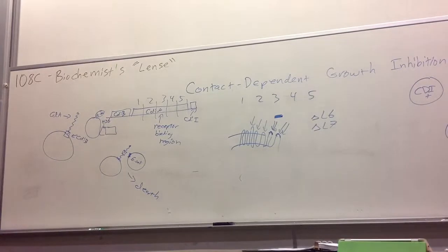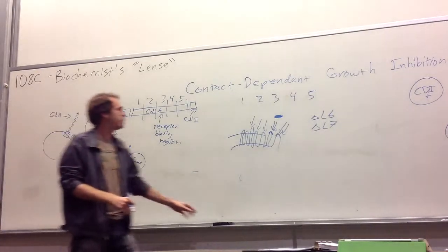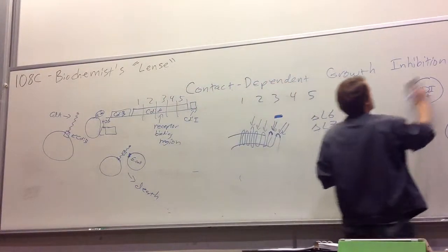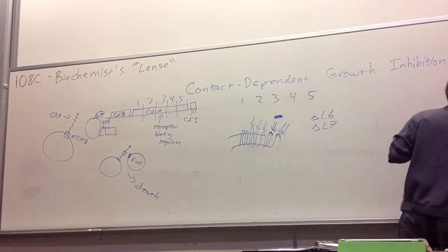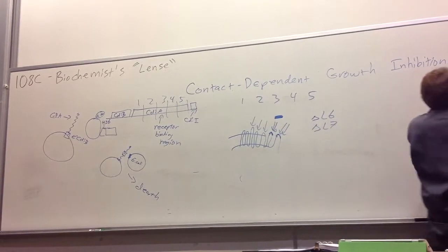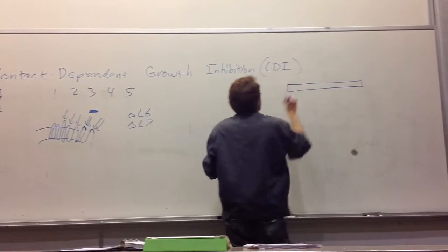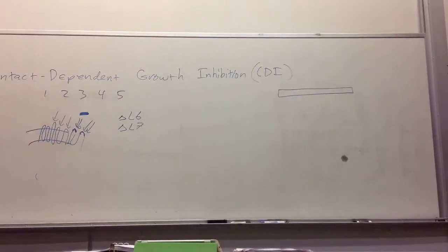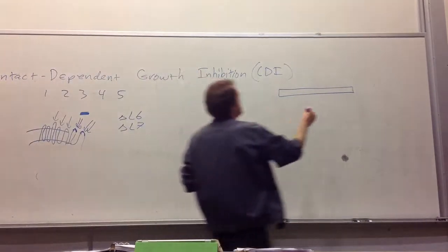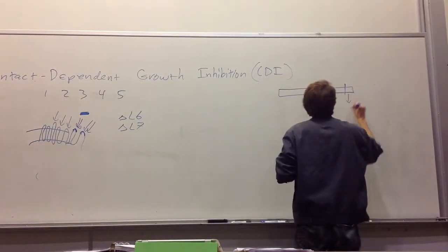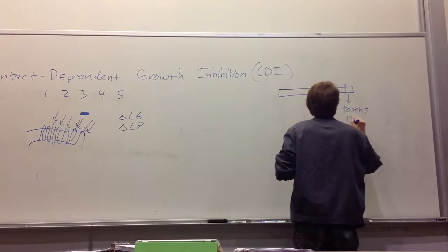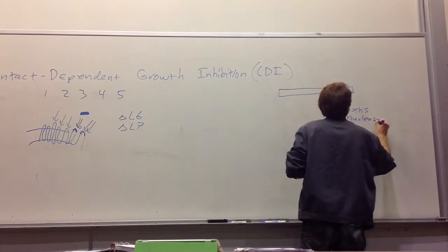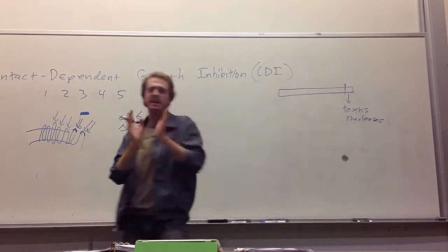Other people in the lab, they were interested in, well, how are the cells dying? What's killing the cells? So they started off with bioinformatics, which is a powerful tool. And what they found is if you compare CdiA, just do a BLAST search, which compares the CdiA protein to other proteins, what you find is that this internal domain here looks like toxins, specifically nucleases, things that cut DNA and RNA.